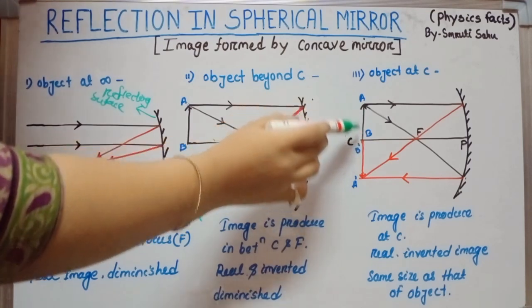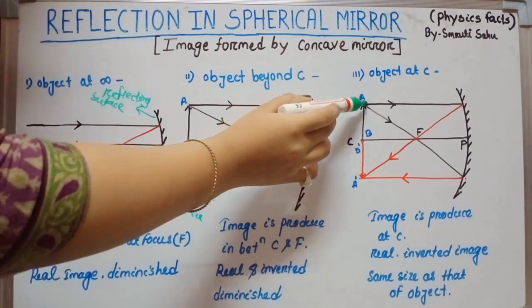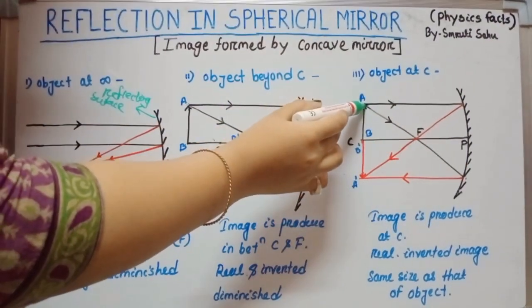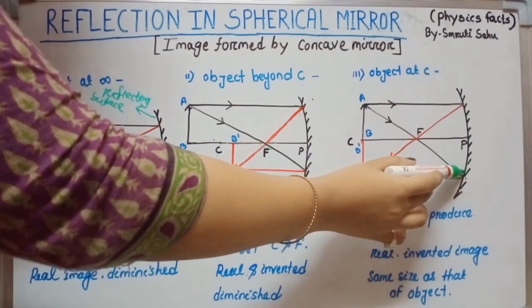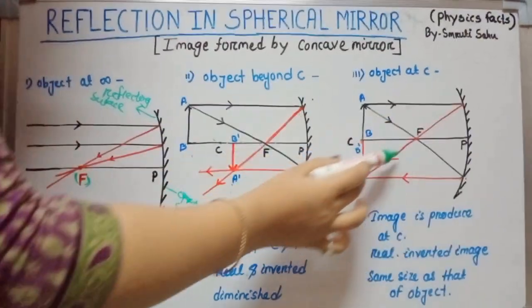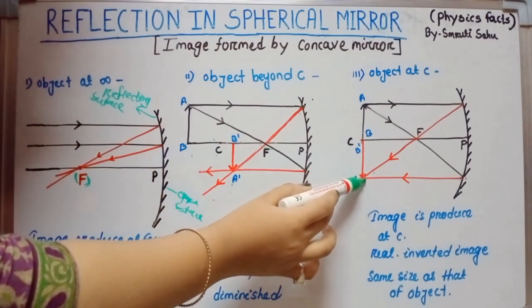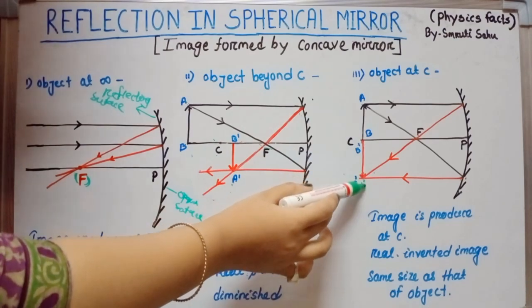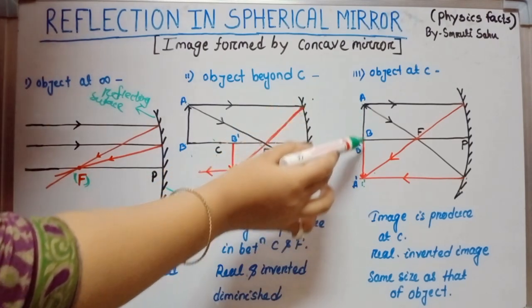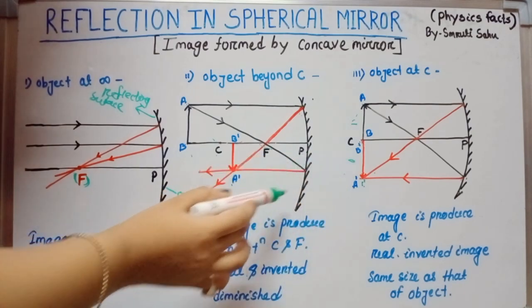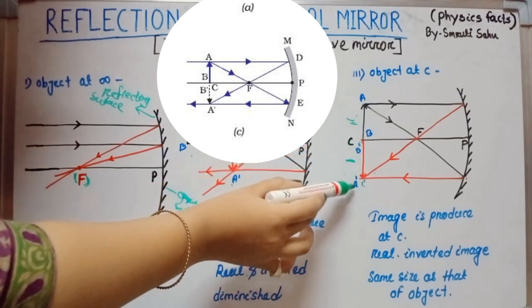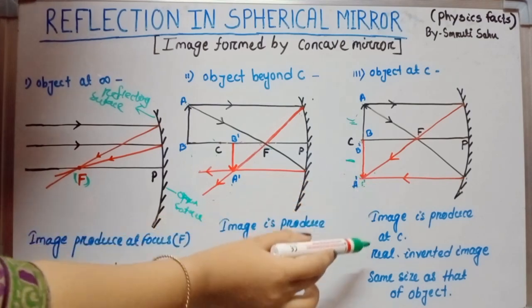If object is at C, take one incident ray parallel to the principal axis — after reflection it goes through focus. Another incident ray passes through focus and hits the concave surface — after reflection it goes parallel to the principal axis. These two reflected rays meet at C, so the image is produced at the center of curvature. The image is the same size as the object, and it is real and inverted.